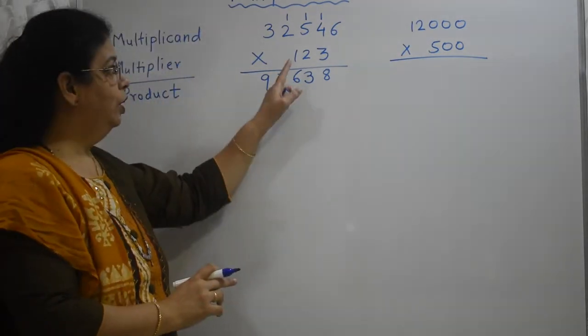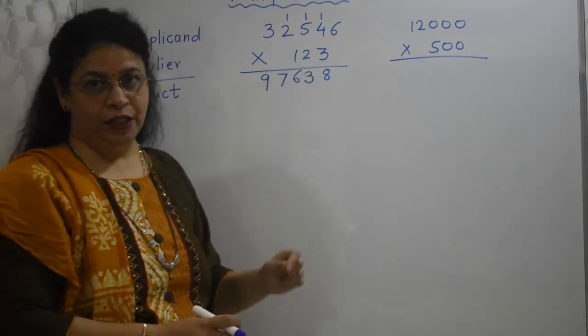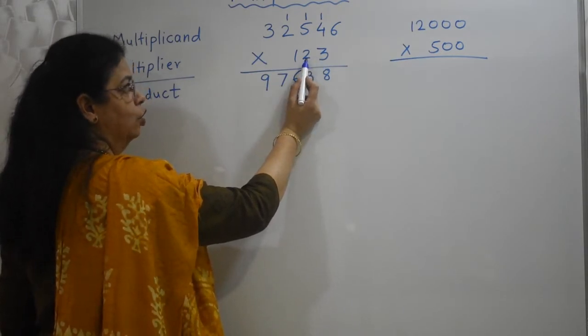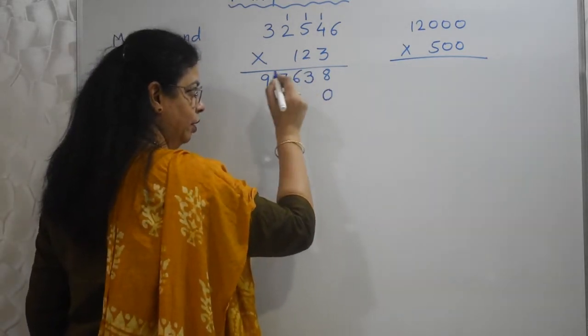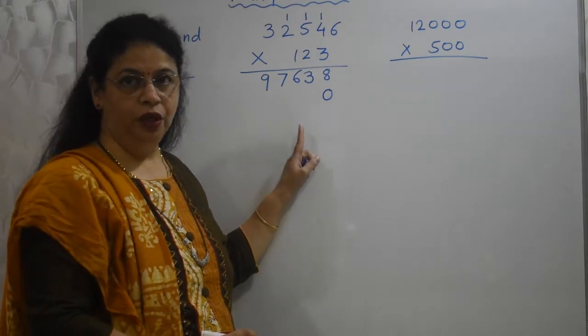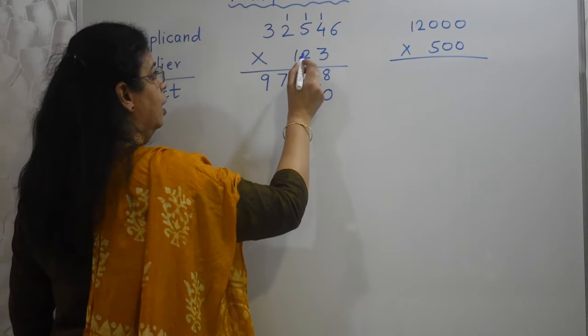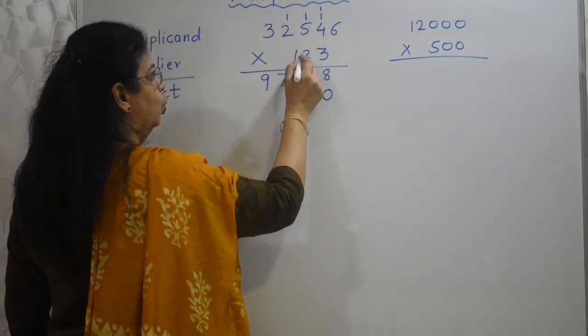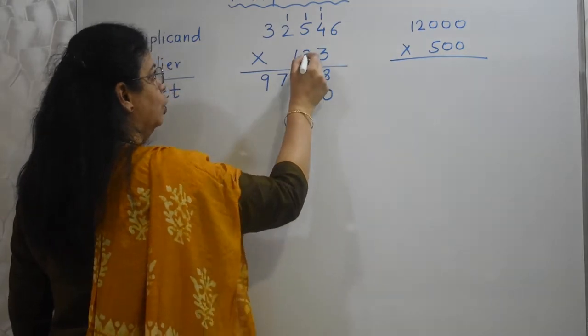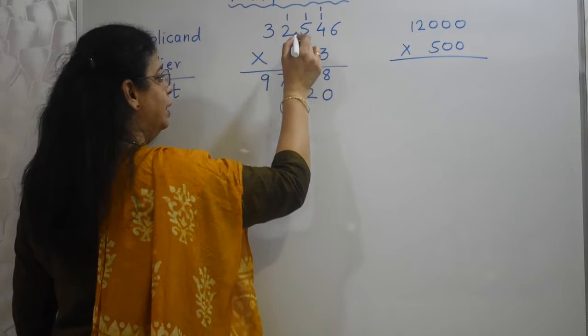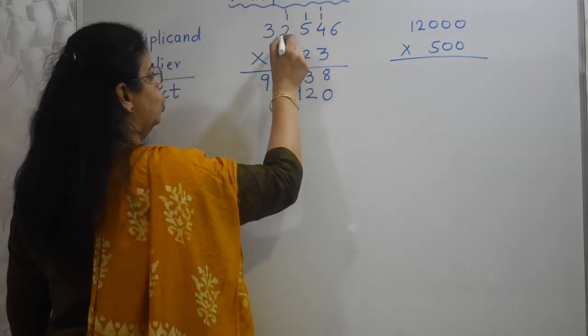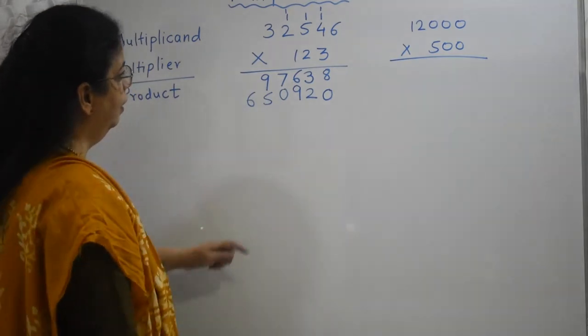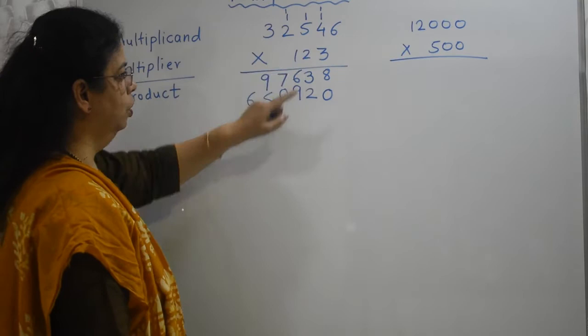Now I need to begin with 2. But children, 2 is in tens place. There is one number after 2. So 2 is in tens place. So we must give 0 here. Unless and until we write 0 here, we cannot proceed with the multiplication. So now we can start. Assume only 2 is there. 2 6s are 12. So 2 carry over 1. 2 4s are 8 plus 1, 9. 2 5s are 10. So 0 and 1 carry over. 2 2s are 4 plus 1, 5. And 2 3s are 6. I have multiplied 32546 by 2 by adding 0 here.